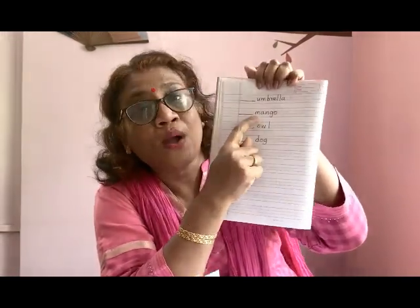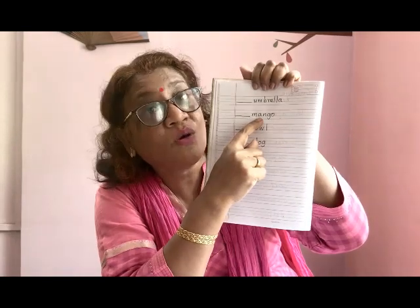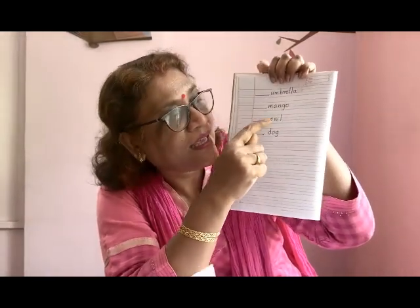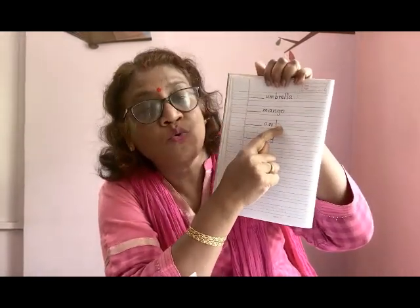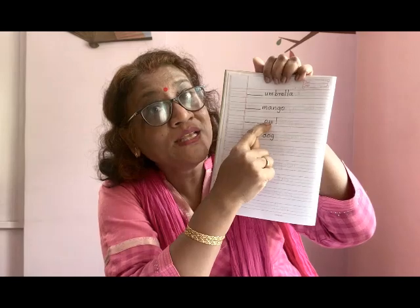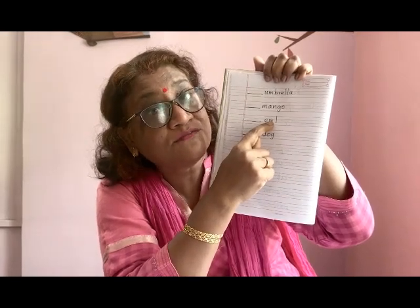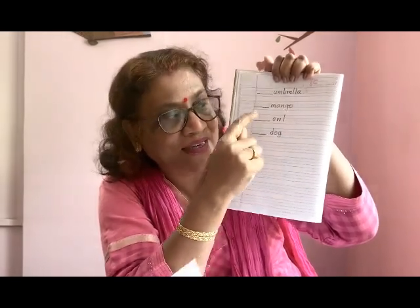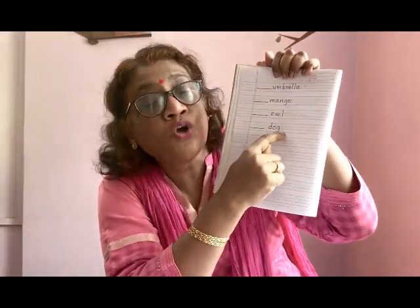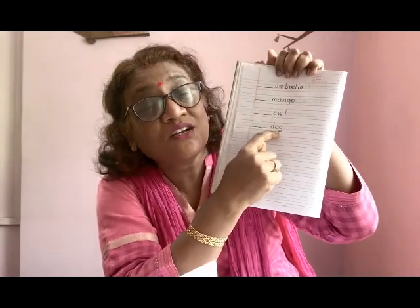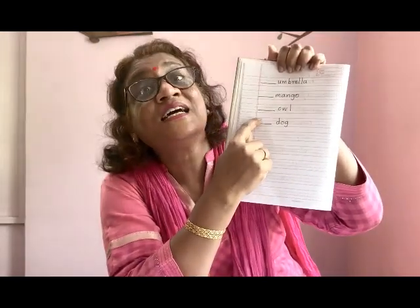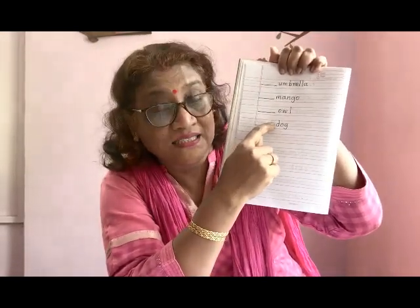Mango — M is a consonant, so what will you write in front of mango? A. Owl — O is a vowel, so what will you write in front of owl? An. Dog — D is a consonant, so what will you write in front of dog? A.